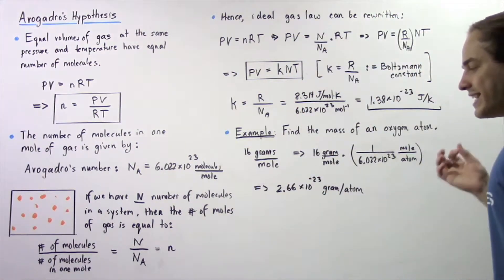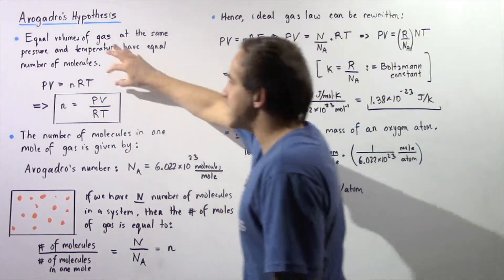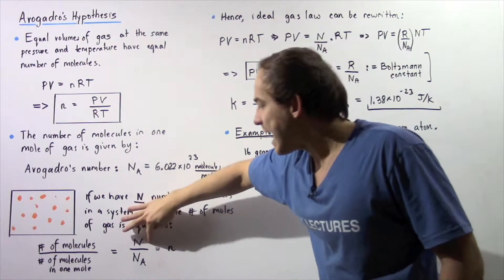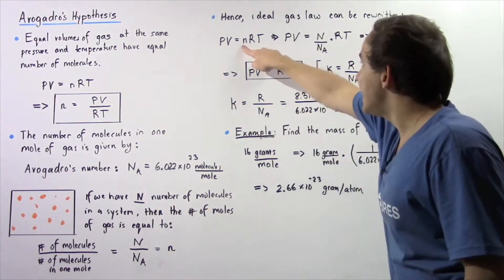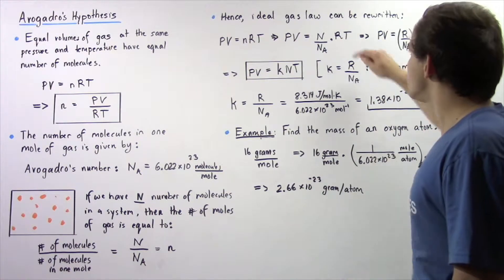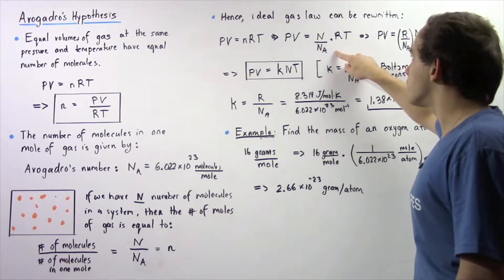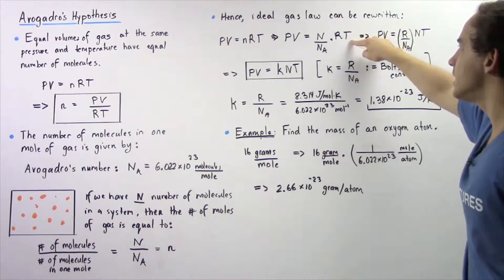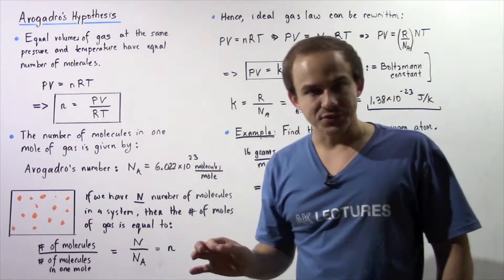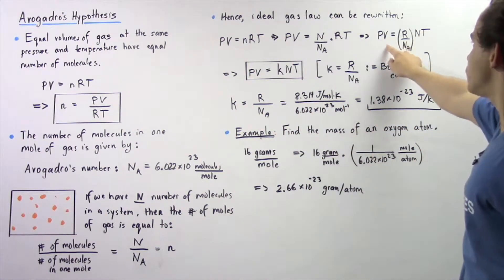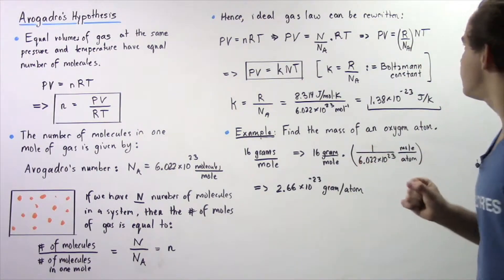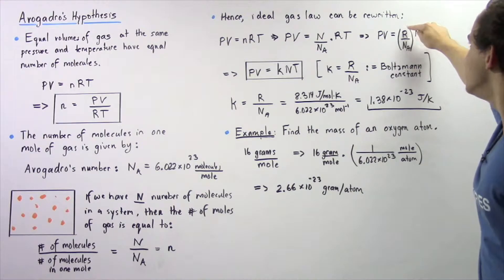The ideal gas law can now be rewritten in the following format. If we take the ideal gas law and combine it with the moles equation, we basically replace the molar N with capital N divided by N subscript A. So the pressure times the volume of our gas is equal to the number of molecules divided by Avogadro's number, multiplied by the gas constant, multiplied by the temperature given in Kelvin. Notice that N_A and R are both constants, so let's combine them and write the equation as: PV equals N times T multiplied by the ratio R divided by N_A.